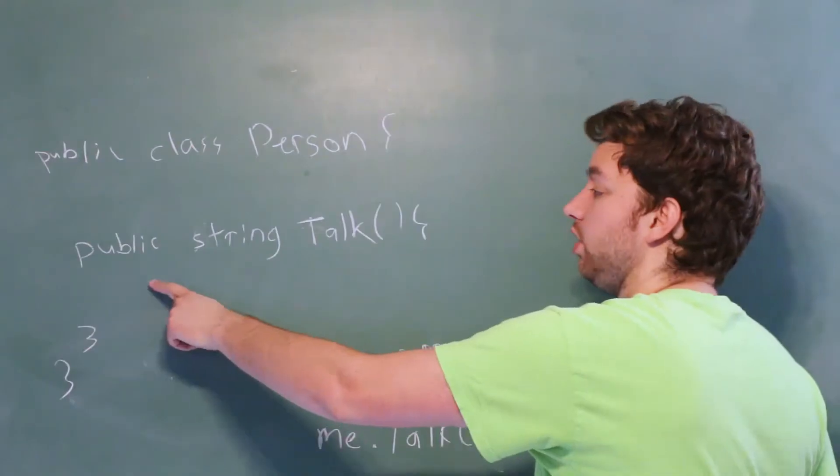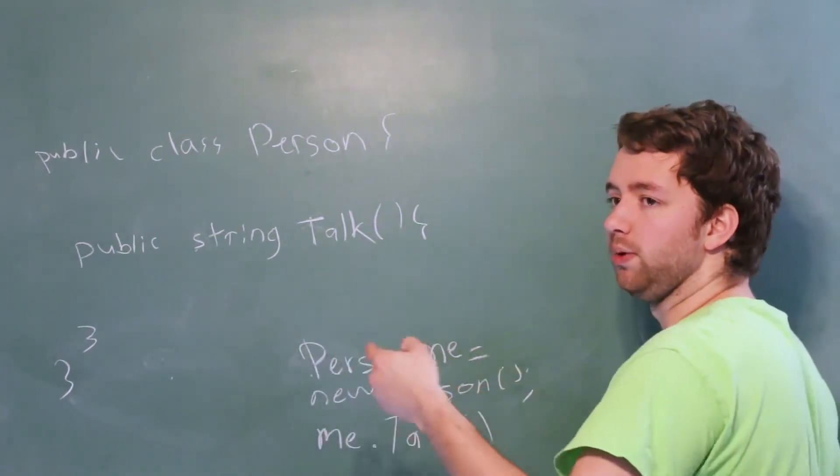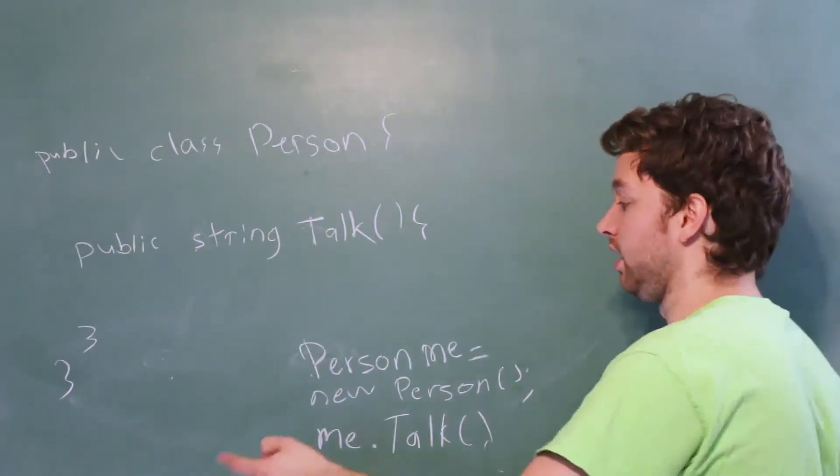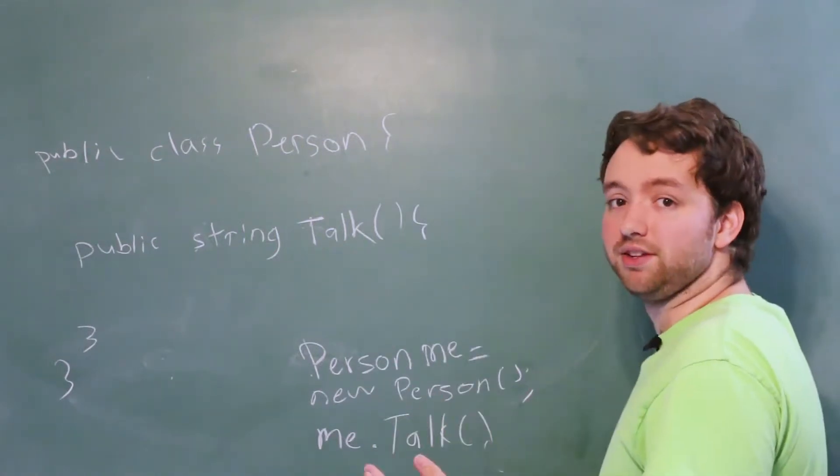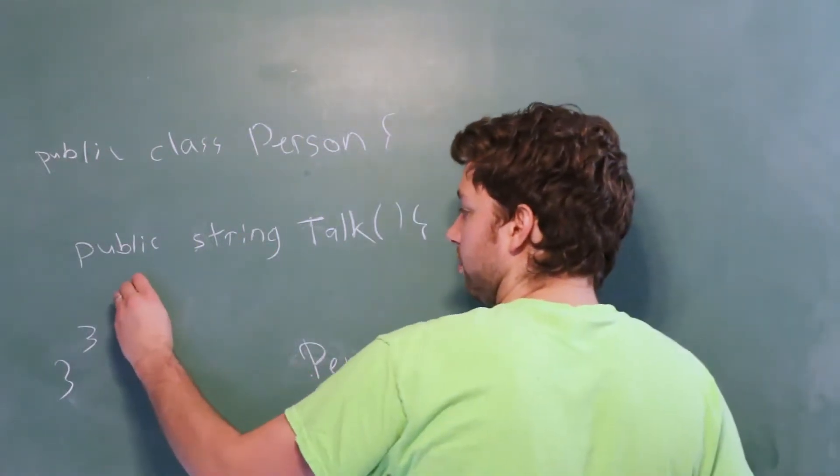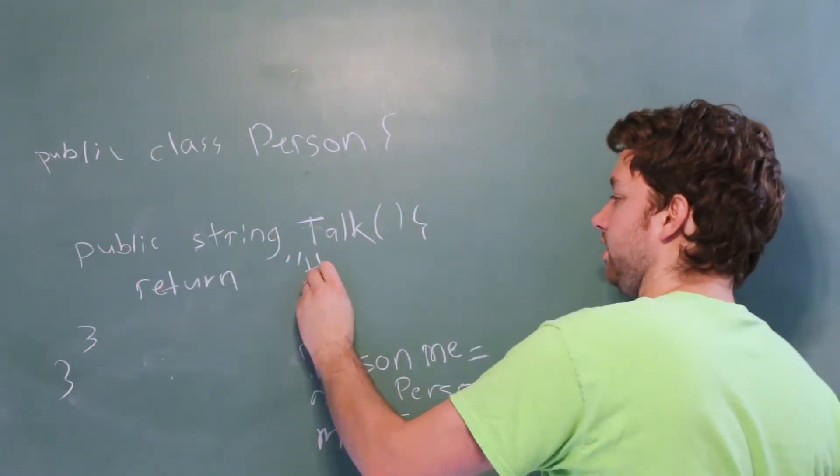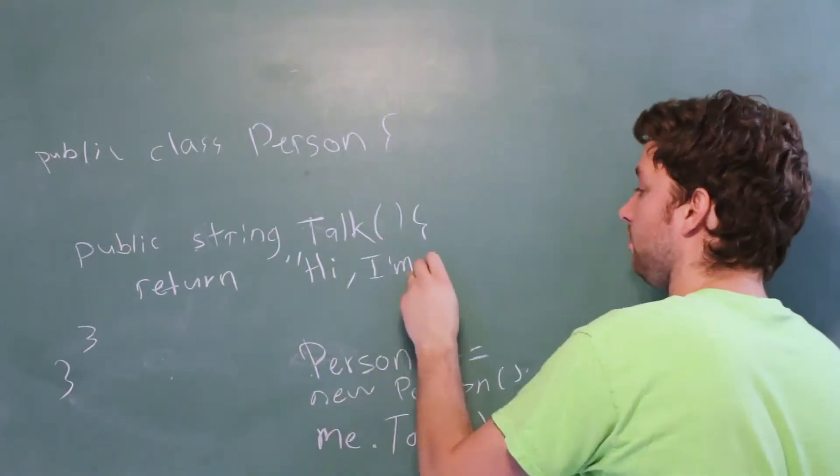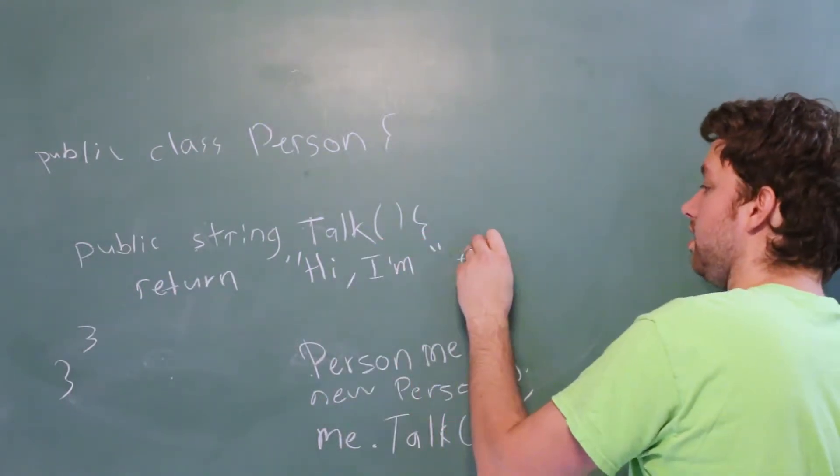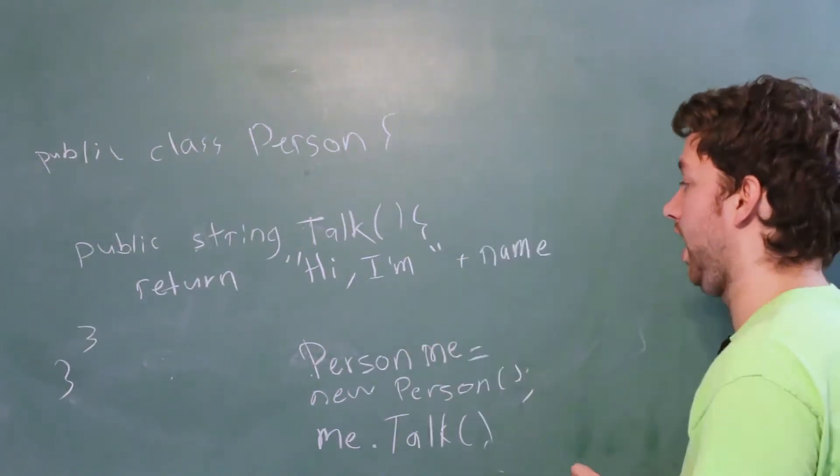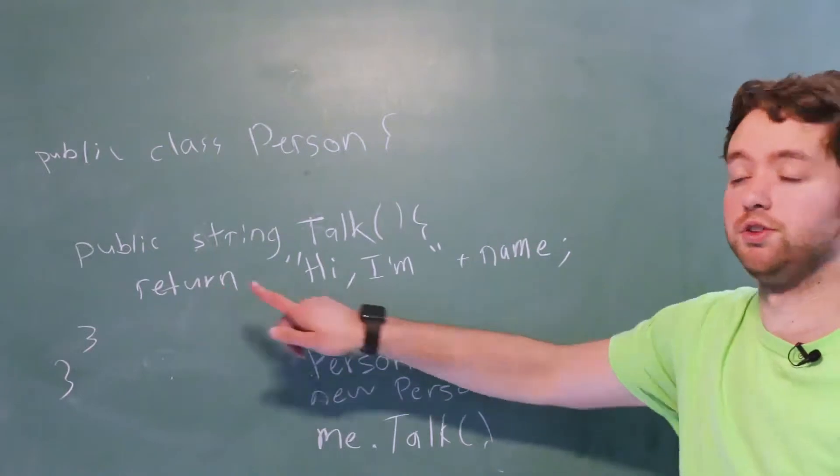But what we could do is we could console write line the person's name or what we could do is we could actually return a string and then console log it down here, which is more of a best practices way of doing things. So we would probably say return. What are we going to return? We can just return a string and say, hi, I'm, put a space and the string, put a plus sign, and then we could use a field name and then a semicolon. So that's going to return the string.